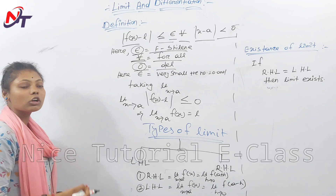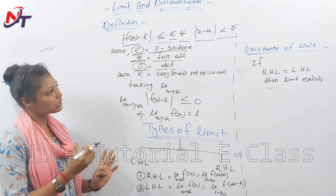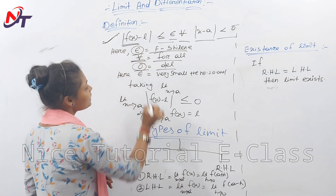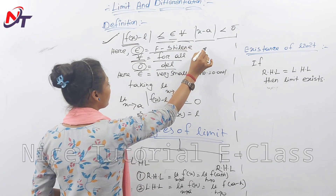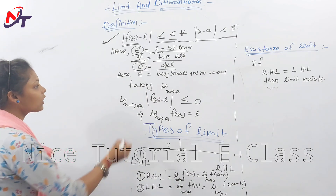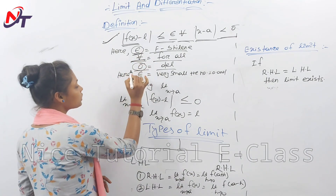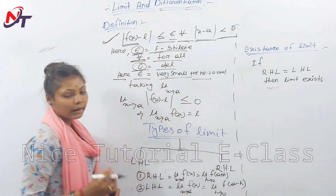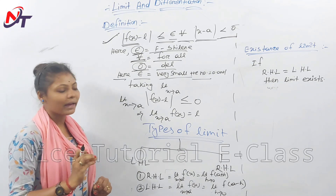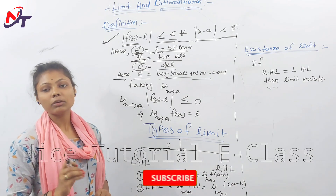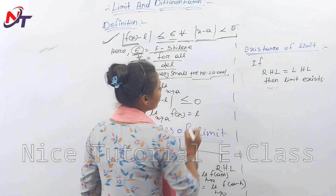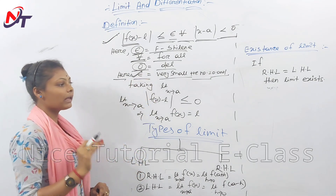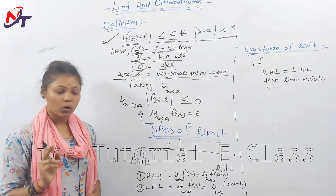We use delta and epsilon together. Epsilon is a very small positive number — for example, 0.0001 or 0.001 — both are very small positive numbers (Sankhya). Delta is also used as a very small positive number.